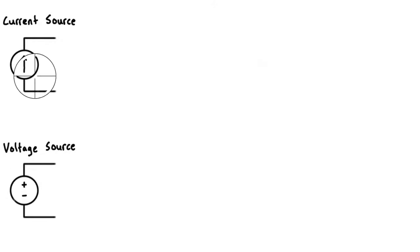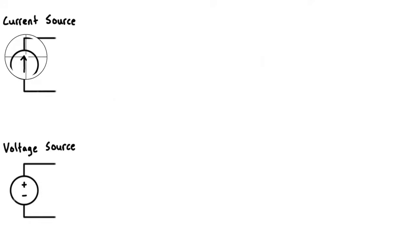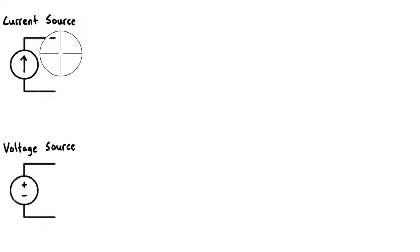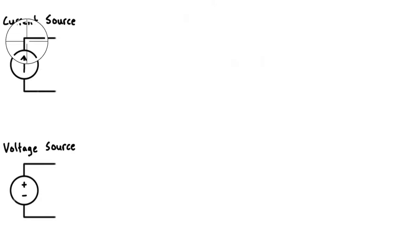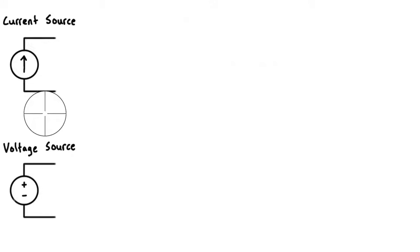Ideal independent current sources work basically the same way, but what they do is make sure that a certain amount of current is always flowing through, and they'll make sure the voltage across it is whatever it takes to ensure that current is flowing through. If you have a resistor of some resistance connected to it, and this is specified to like two amps, depending on the resistance provided by the rest of the circuit, the voltage will be whatever it takes to keep that current constant. So these independent power sources will do whatever it takes to maintain their constant values with no regard to what's going on in the rest of the circuit.